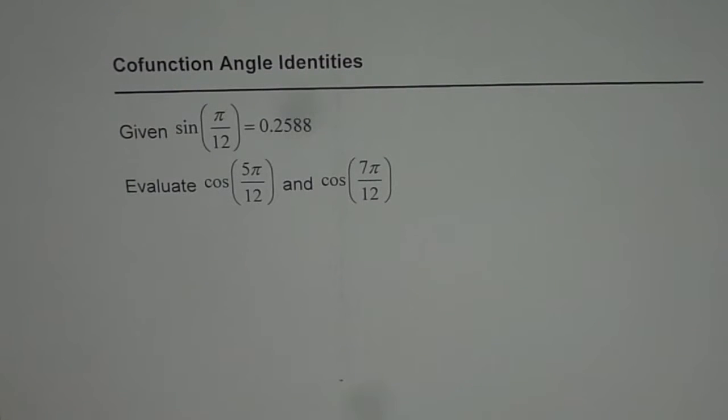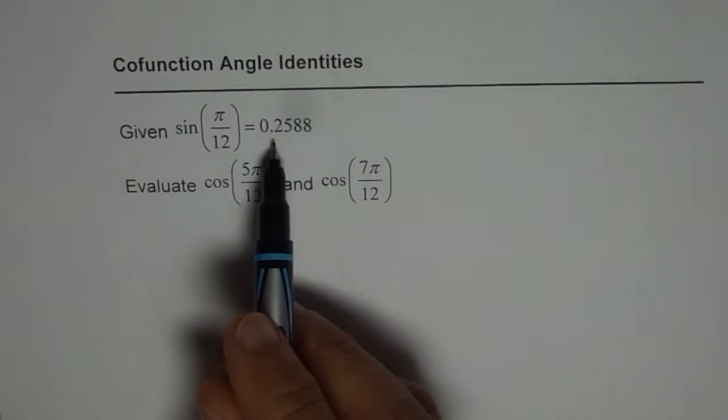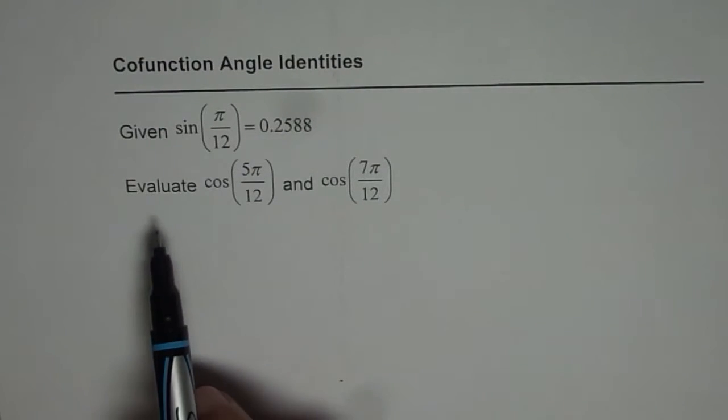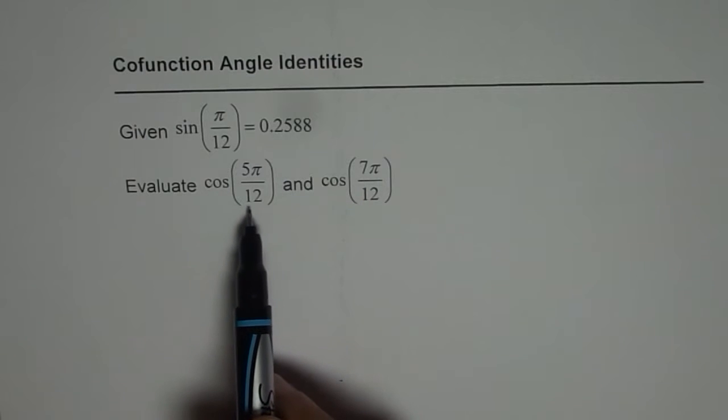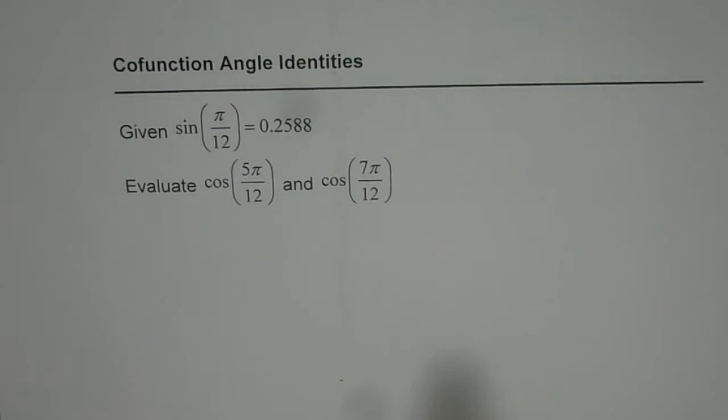I am Anil Kumar and here is an excellent example which will help you to understand how to apply cofunction identities. We are given sin of π/12 as 0.2588 and we need to evaluate cos of 5π/12 and cos of 7π/12.